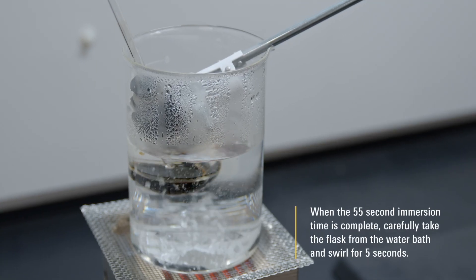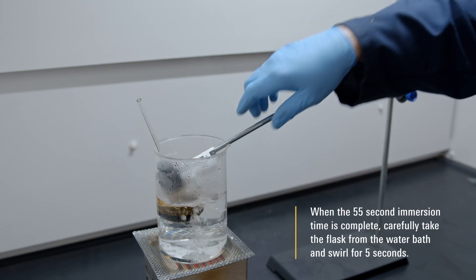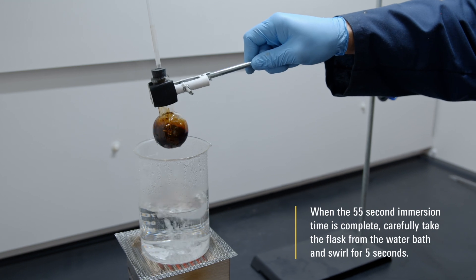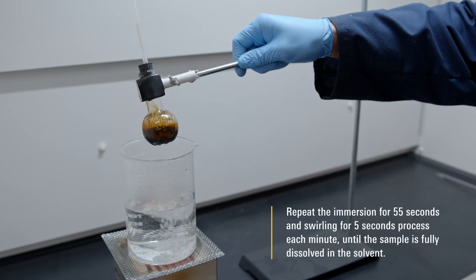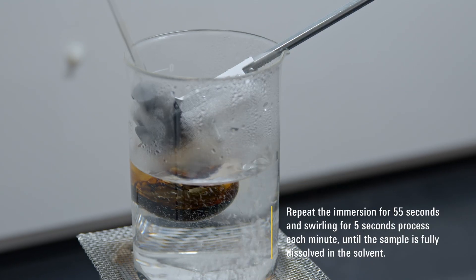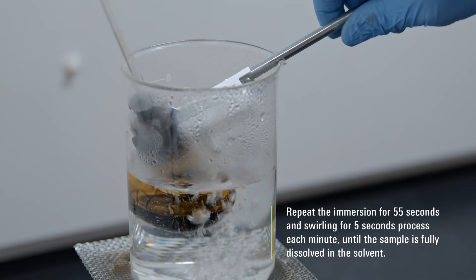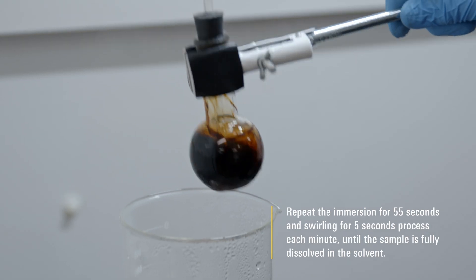When the 55 second immersion time is complete, carefully take the flask from the water bath and swirl for 5 seconds. Repeat the immersion for 55 seconds and swirling for 5 seconds process each minute until the sample is fully dissolved in the solvent.